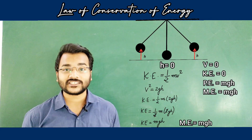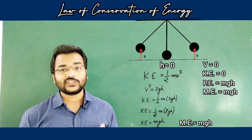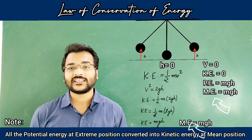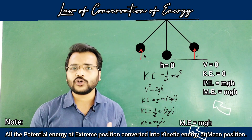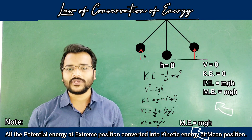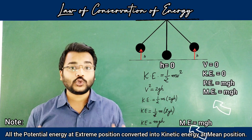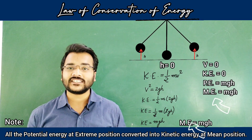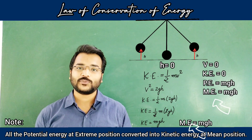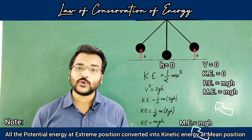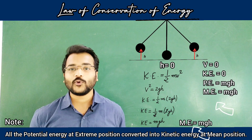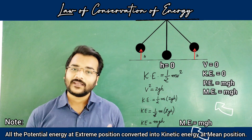This derivation proves that the total mechanical energy at the extreme position equals the total mechanical energy at the mean position — both are mgh. What is changing is only the form of energy: at one point it is kinetic energy, at another it is potential energy. But the total mechanical energy is conserved — woh constant hai, woh change nahin hui hai — and this is exactly what the law of conservation of energy states: total energy in a system remains conserved. That's all for today. I hope to see you in the next video. Thank you everyone.